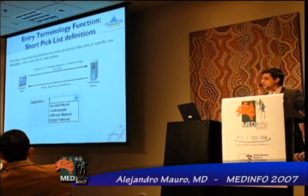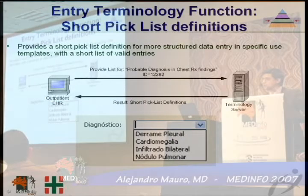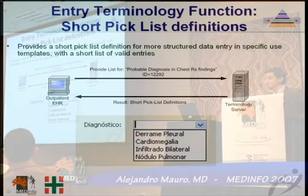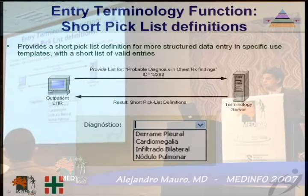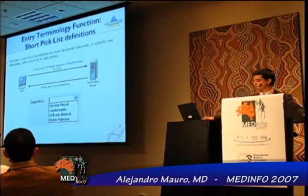Another function of the entry terminology is the short-peak list definitions. The terminology server provides short-peak list definitions for most structured data entry and specific used templates with a short list of valid entries. For example, in the Opatient electronic health record, one can ask the terminology for a list of probable diagnoses in chest radiographic findings, and the terminology server builds up these short-peak list definitions for the physician to select from.